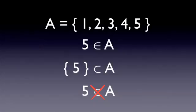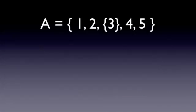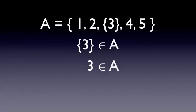On the other hand, a subset can be an element of a set. For example, if we define set A like this, it would be correct to say that the set containing 3 is an element of set A. Notice that we have replaced the number 3 with a set that contains the number 3. The set of 3 is an element of set A, but if we remove the braces, this statement is no longer correct. In this case, 3 is not an element of set A — only the set containing 3 is an element.